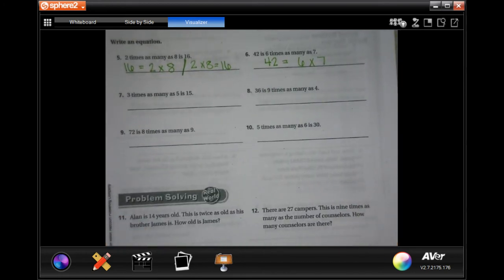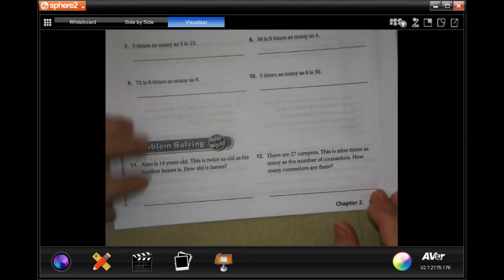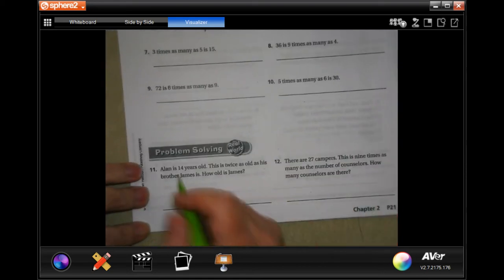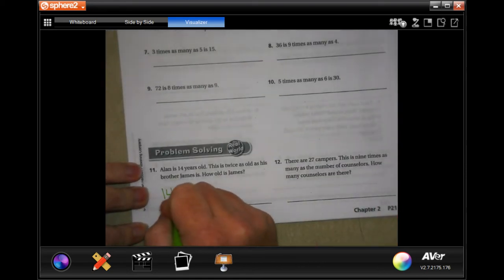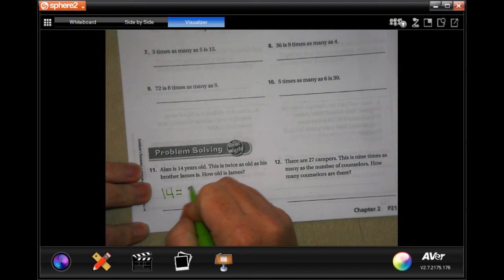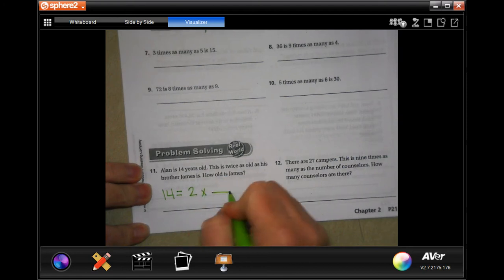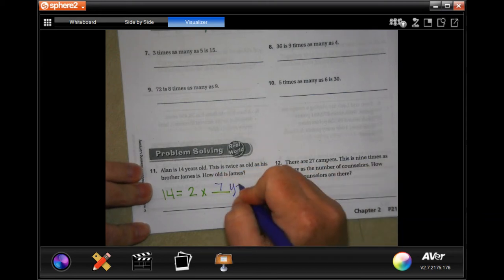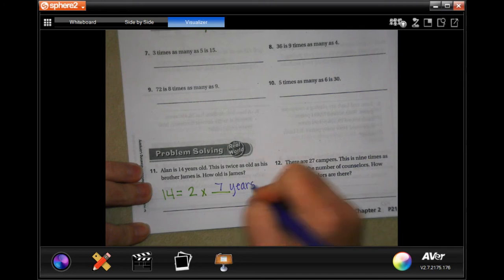It says Alan is 14 years old. This is twice as old as his brother James. How old is James? So 14 is two times blank. Well, I know that 14 is two times seven. Seven years old.